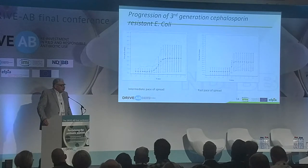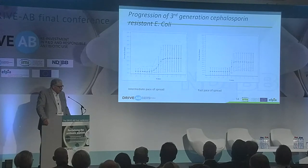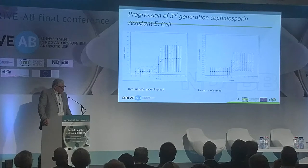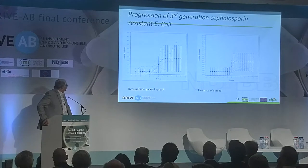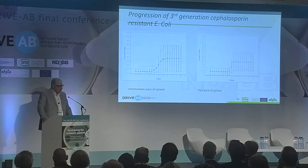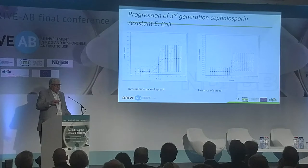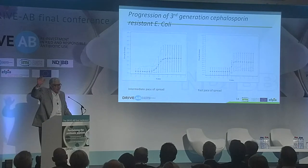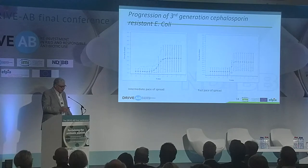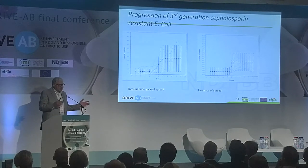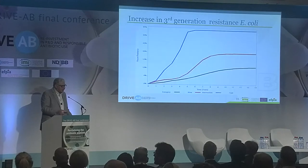Here is what we have seen for the progression of third-generation cephalosporin-resistant E. coli. You can see two different states: one showing intermediate level of spread and one showing high level of spread. You can draw a sigmoid curve of progression of the organisms with different shapes — one very fast, reaching very high levels; and one much slower, leading to a much lower level of resistance. We have done that for different organisms across slow, medium, and high progression, fitted for each country to generate those sigmoids.